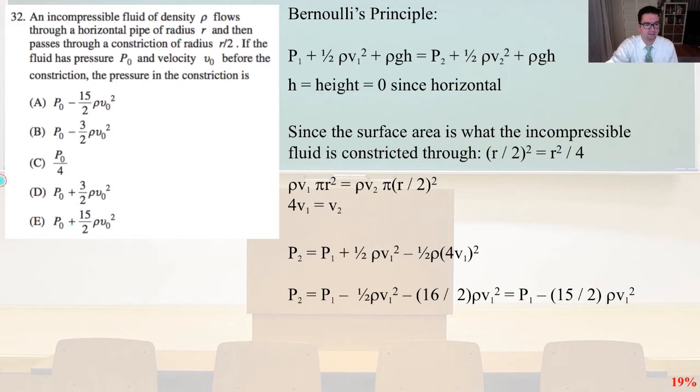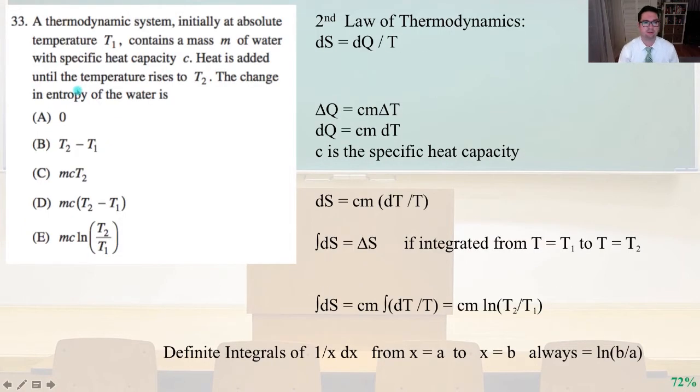And that is answer A. Number 33, a thermodynamic system initially at absolute temperature T1 contains a mass M of water with specific heat capacity C. Heat is added until the temperature rises to T2. The change in entropy of the water is, here we're going to apply the second law of thermodynamics, where dS equals dQ over T.